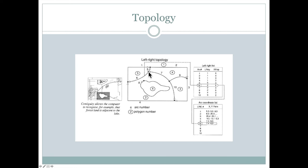We can imagine driving along from the from node to the to node. If we looked out the right-hand window, we would see polygon number five on our right side. And if we looked out the left-hand window, we would see polygon number two on the left side. So we've stored the left poly as polygon number two and the right poly as polygon number five. Each of these lines has intelligence built into it and knows what polygons are on either side of it.